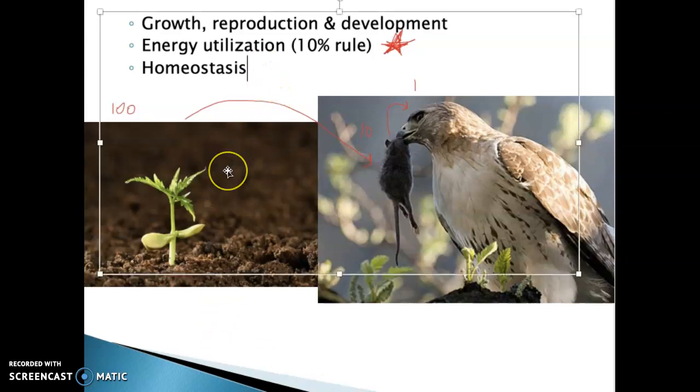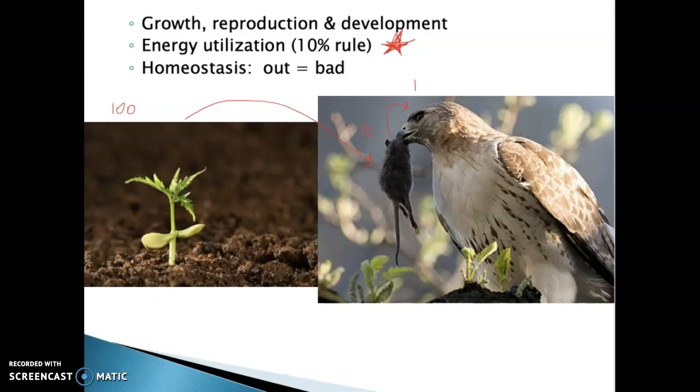If we get out of homeostasis, that's bad. That is very, very bad if your body goes out of homeostasis. That's what becomes a life-threatening issue and ultimately we will die if we can't maintain homeostasis. So that's number 1, 2, 3, 4, 5, 6. And the big number 7, all living things have evolutionary adaptations.